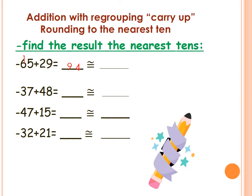The next one: 37 plus 48. We start with the ones: 7 plus 8 equals? After 8: 9, 10, 11, 12, 13, 14, 15. We can't write all 15 — we write 5 and carry up 1. Then, don't forget the 1: 1 plus 3 equals 4, then 4 plus 4 equals 8. Excellent. The next one: 47 plus 15. Here is 7 plus 5 equals 12. Write 2 and carry up 1. 1 plus 4 equals 5, and 5 plus 1 equals 6. Here is 62.